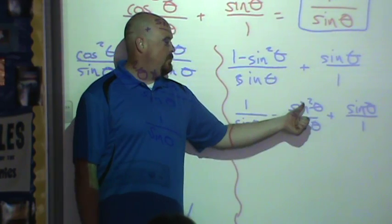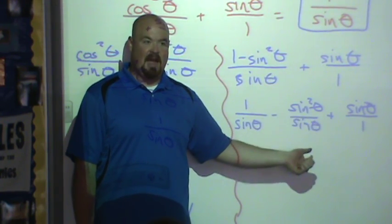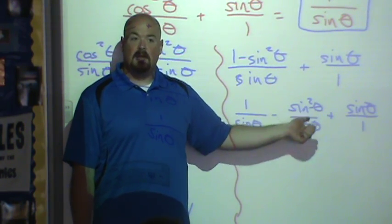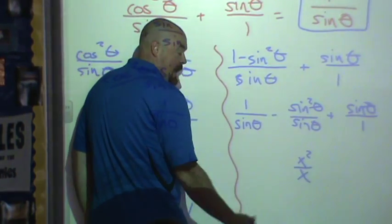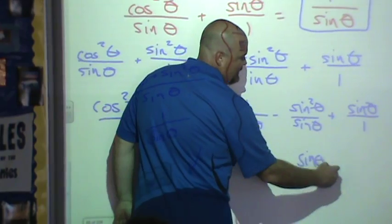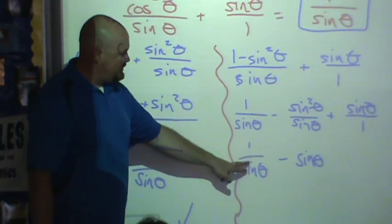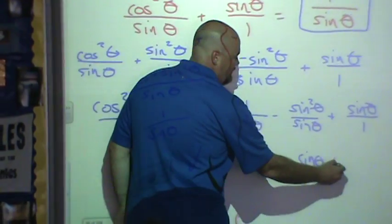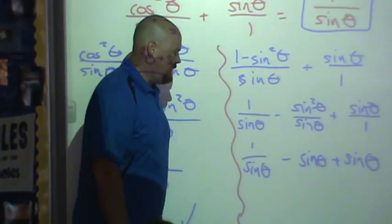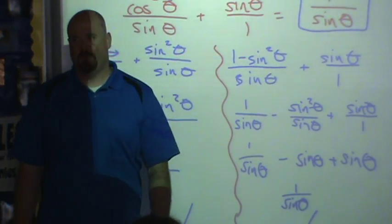Decomposing, though, would only make sense if there was a sum or a difference. This is sine squared. This is sine. So I have a squared term over something that's not, but it's the same base. So what does that turn into? Sine. This is sine theta. What's x squared over x? X. One of the x's cancels on the top with the x on the bottom. So this is sine theta minus sine theta, technically. So I have one over sine theta minus sine theta plus sine theta. These terms will cancel, and I have one over sine theta. Totally different approach. Same solution.